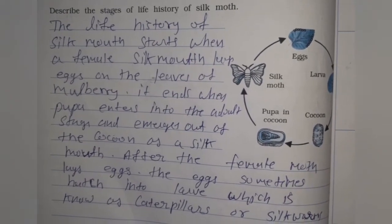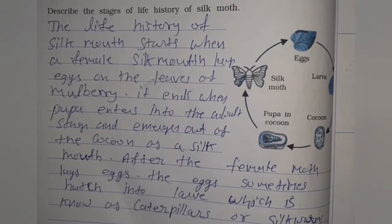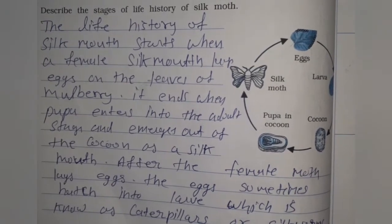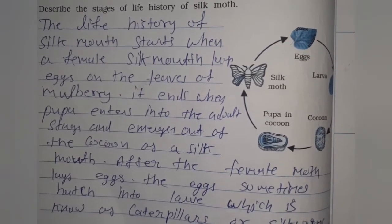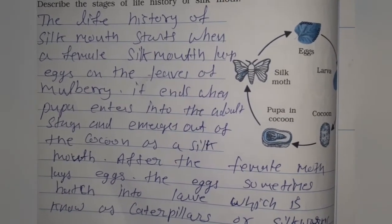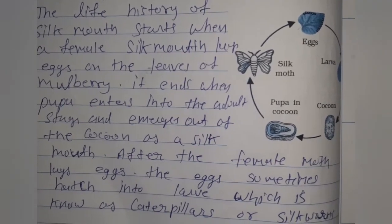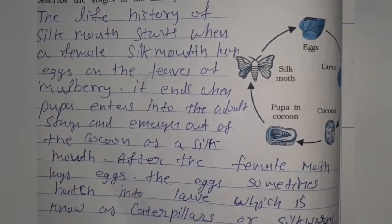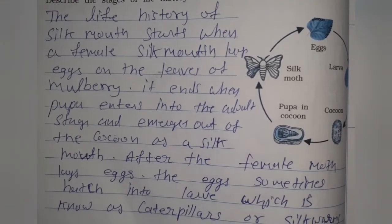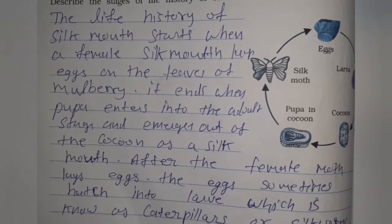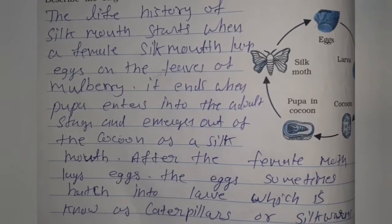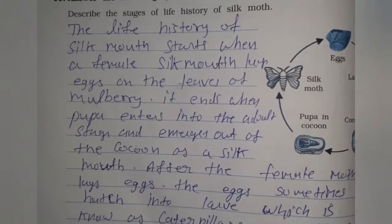Describe the stages of the life history of the silk moth. The life history of silk moth starts when a female silk moth lays eggs on the leaves of the mulberry tree. It ends when the pupa enters into the adult stage and emerges out of the cocoon as a silk moth. After the female moth lays eggs, the eggs hatch into larvae known as caterpillars or silkworms.